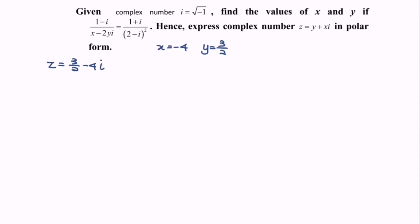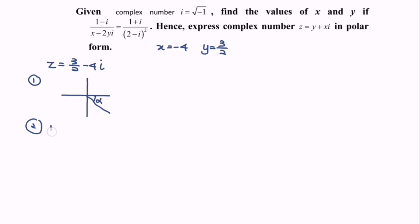So step number 1, we have to refer to the Argand diagram, where the location would be 3 over 2 on the positive real axis and negative 4 on the imaginary axis, so we will be in the fourth quadrant. Here we will have alpha as the basic angle.